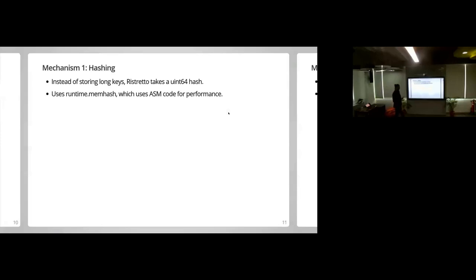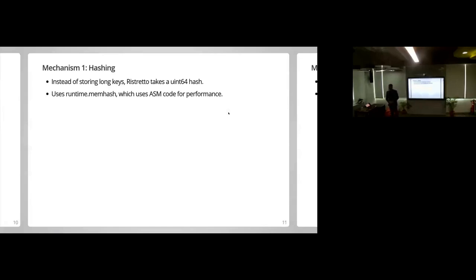So we just took a hash of the key and made that the basis for storage. Somebody could argue there would be collisions — and that's true. Right now the cache doesn't handle that; it's a to-do for us to detect and deal with collisions. But instead of using existing hash functions like farm fingerprint64 which we use in DGraph, we hooked into Go's memhash, and that gives us a hash in about five nanoseconds. It's really fast.